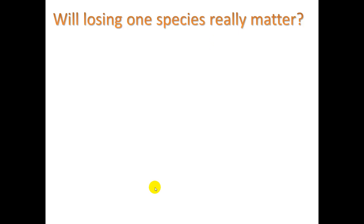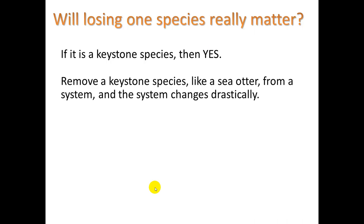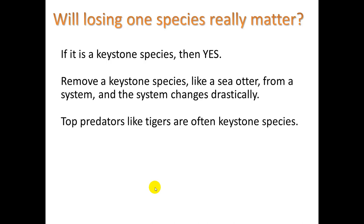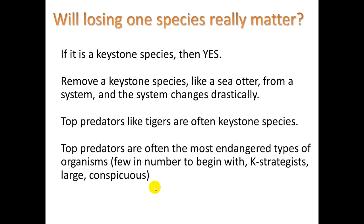Will losing one species really matter? Well, if it's a keystone species, then yes. You remove a keystone species, like a sea otter, from the system, and the system changes drastically. Top predators, like tigers, are often keystone species, and top predators are often the most endangered types of organisms. They are few in number to begin with. They're K-strategists, so they have few offspring, and they must care for those offspring for them to survive. And they're usually large, conspicuous, and easy to hunt.